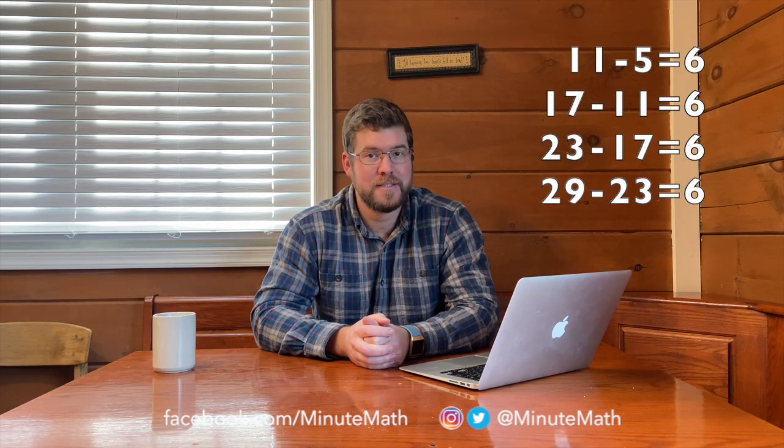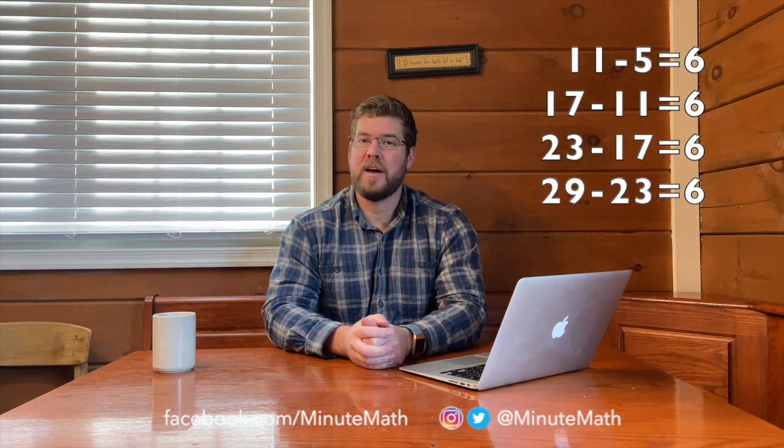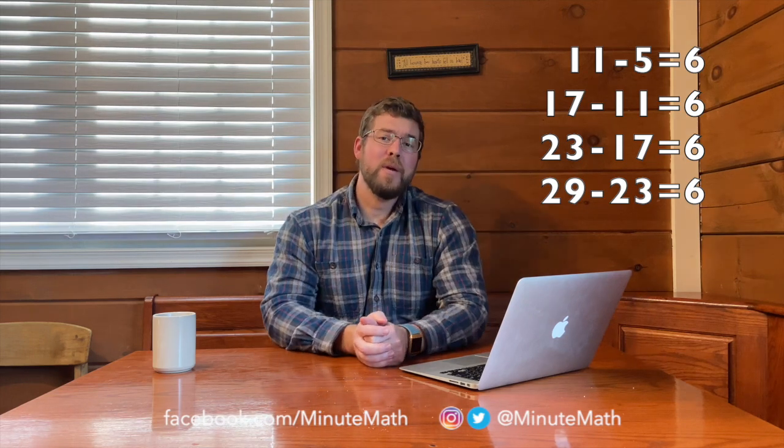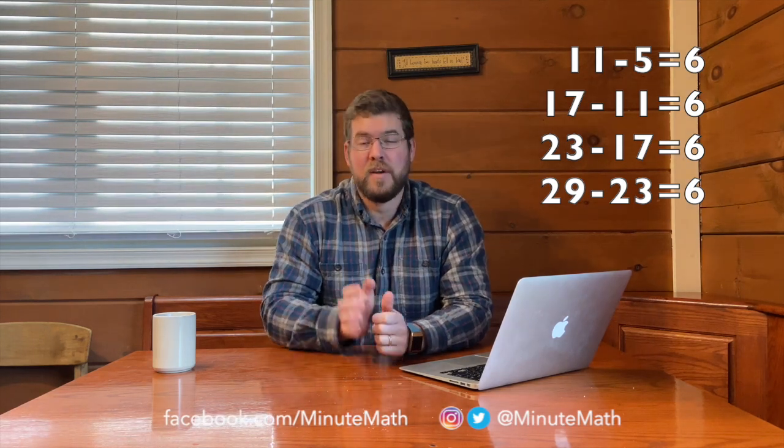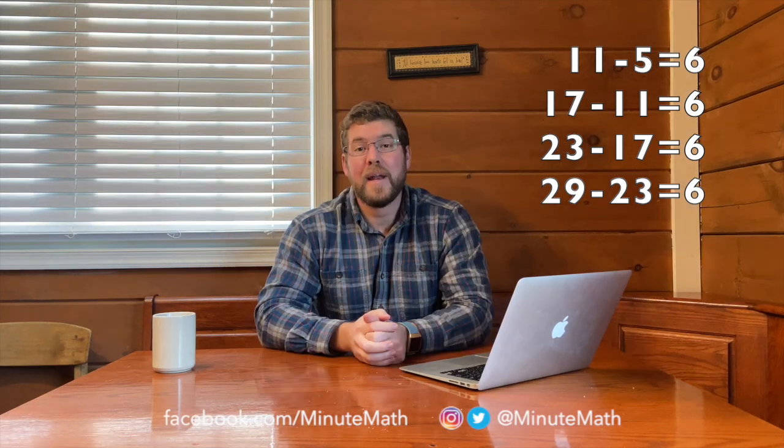All those five numbers are prime numbers, each one 6 apart from the previous one. Like we said earlier, 11 minus 5 is 6, 17 minus 11 is 6 again, 23 minus 11 is 6 again, and lastly, 29 minus 23 is 6. So we have an example here of the sexy prime quintuplets.